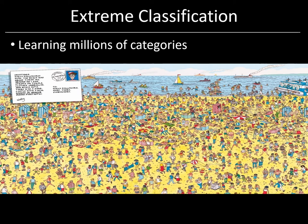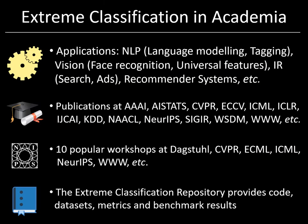Now the reason that extreme classification is so exciting is because it not only lets us tackle web-scale classification problems, but because it has also opened an entirely new area of research with applications in many other domains. In particular, the research community has found applications of extreme classification in areas ranging from information retrieval to recommender systems to natural language processing and even computer vision. And because of this, publications are coming out every year in diverse conferences, not just in machine learning but also in applied areas.